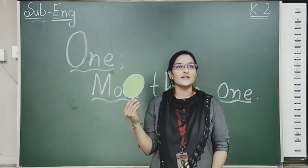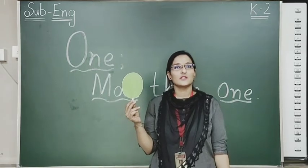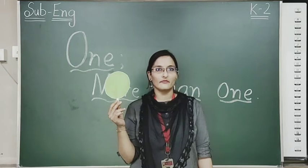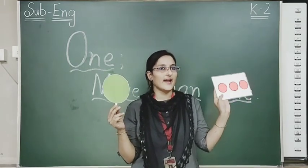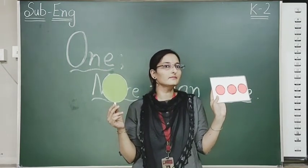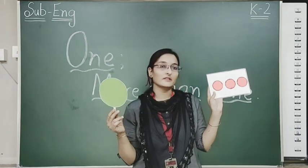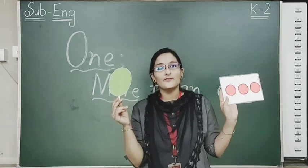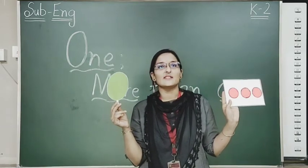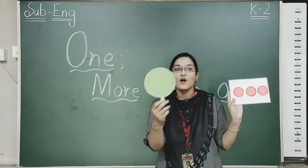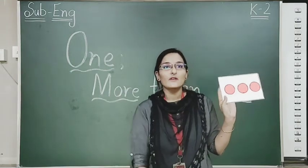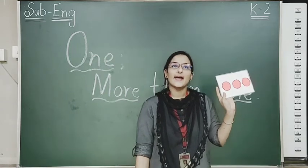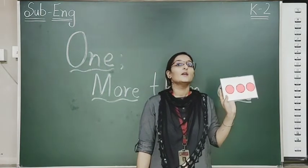Moving to our next example. What is this? Circle. How many? Only one. And on this side, how many circles are there? One, two, three. Now we will repeat the spelling of circle: C-I-R-C-L-E. When we are talking about more than one circle, it will become C-I-R-C-L-E-S. What we have to add? S.